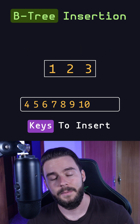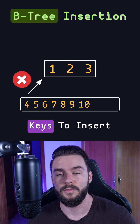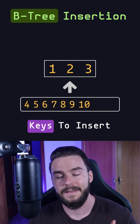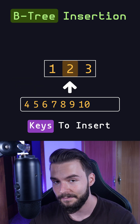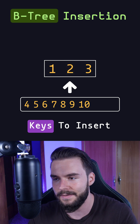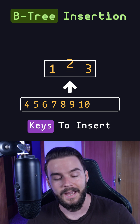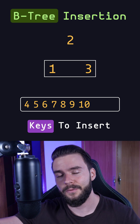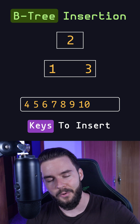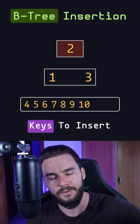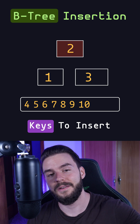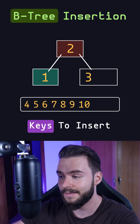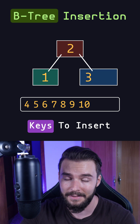Here's how it works. Key number 4 cannot be inserted into the root node because the root node has already reached the maximum number of keys. So we take the median key, which is 2 in this case — because 1, 2, 3: 2 is in the middle — and move it into the parent node. Since there is no parent node because we're already at the root of the tree, we're going to have to create a new node. That node will become the new root of the tree, and then we're going to split the old root into two different nodes: the first one containing the keys before the median, and the second one containing the keys after the median.